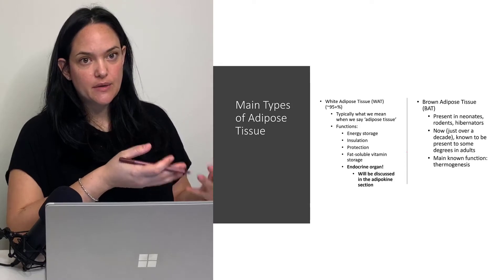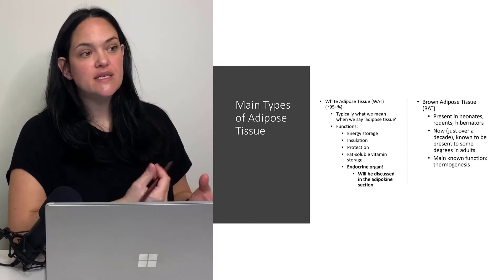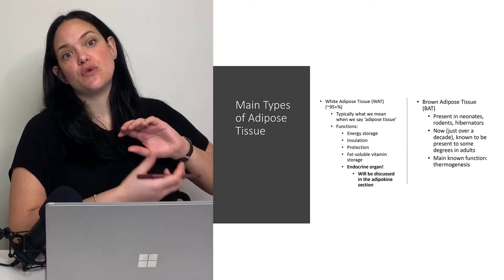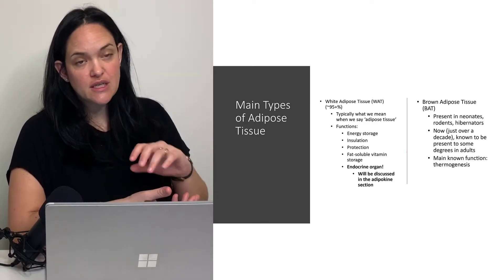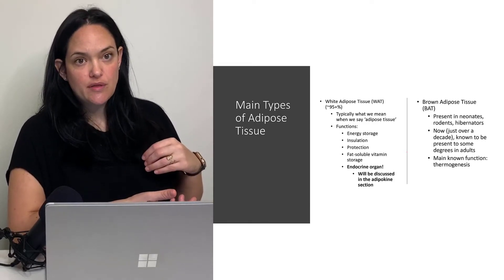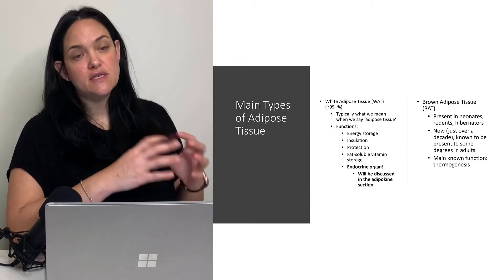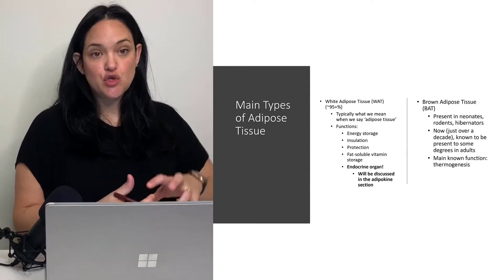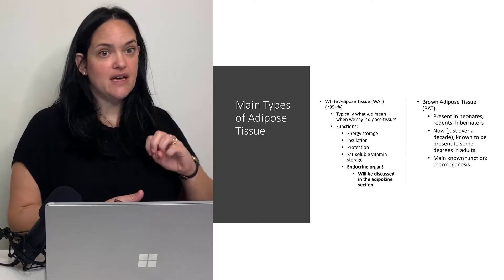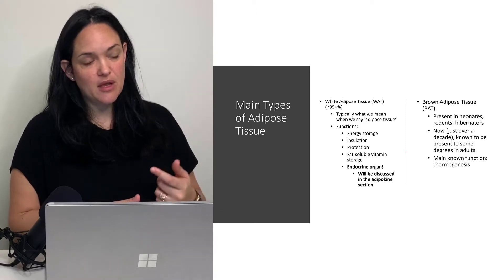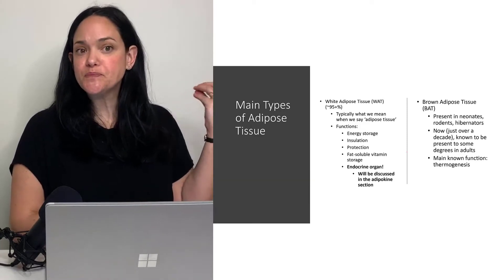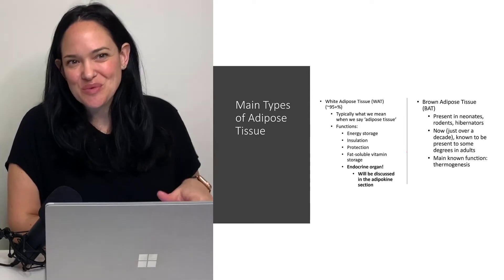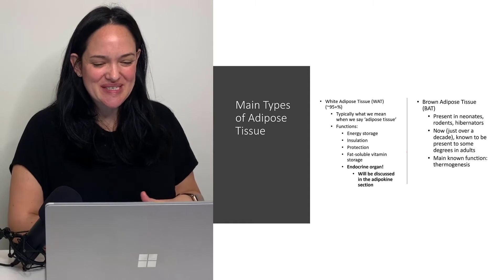When we consume more calories than we expend, those excess nutrients are either already lipids or they're converted into lipids and stored within our adipocytes in the central vacuoles of our white adipose tissue. That allows us to retrieve energy as fat and metabolize it through cellular respiration when we need energy to fuel the body's various needs.